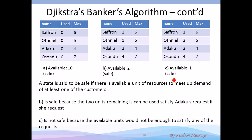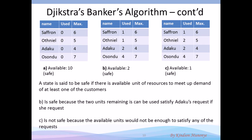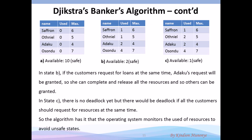In this other state, it's not a deadlock yet but it's not safe. Because if any of the customers ask for more, you cannot provide — there's going to be a complete deadlock. This is how the Banker's algorithm works. Please go back, read it up, pause this video, and understand it a little more.